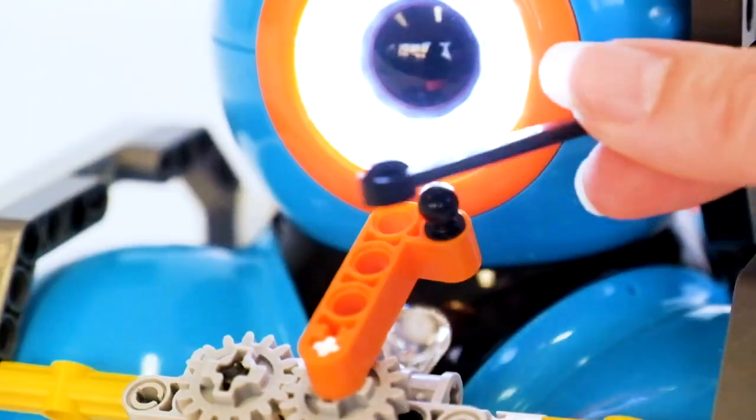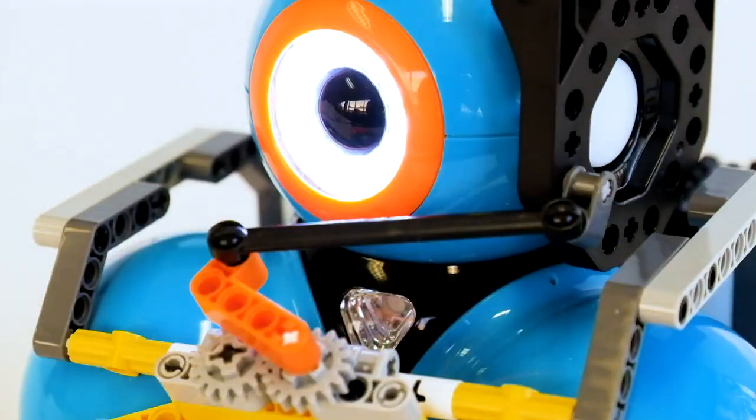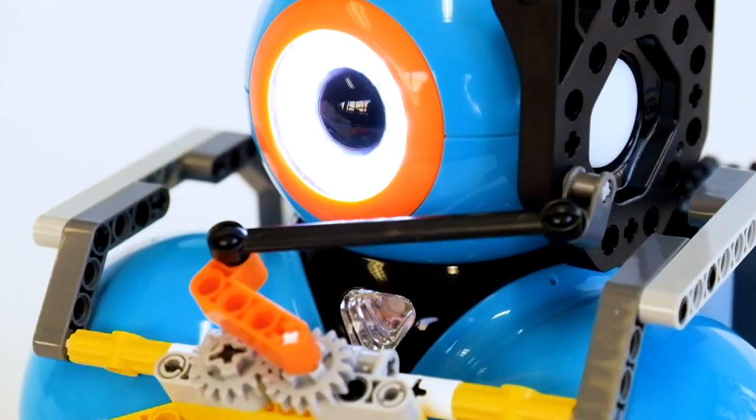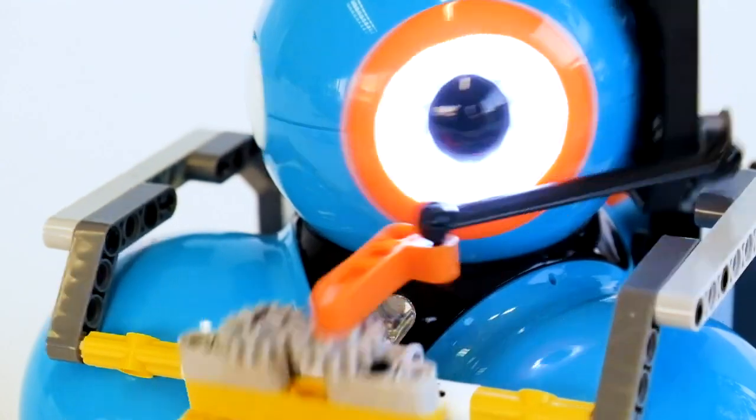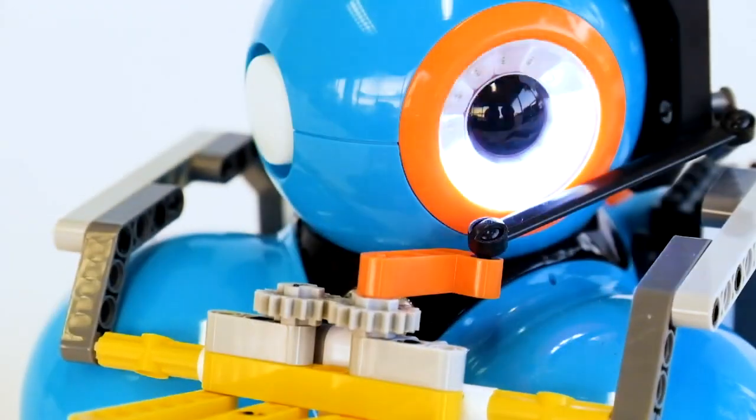So, what makes the gripper lift? The secret is using a ball and socket joint. This type of joint enables a full range of motion. By rotating Dash's head, the ball and socket allow not only movement side to side, but also up and down.